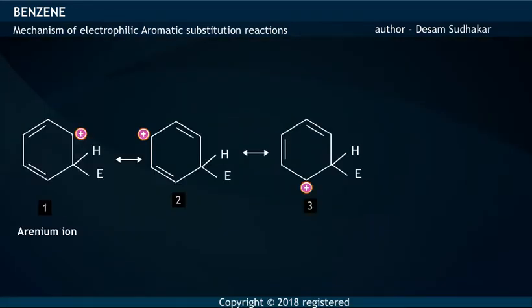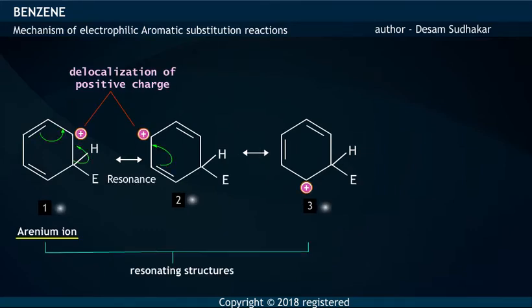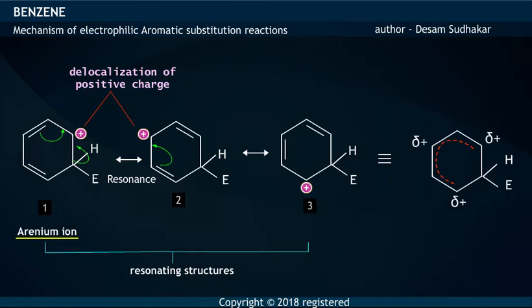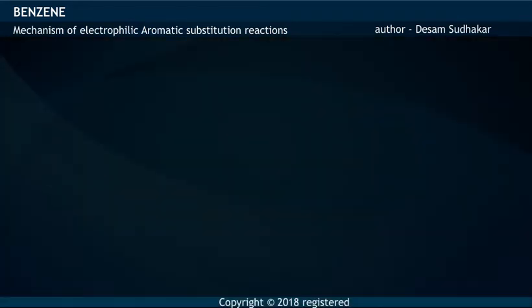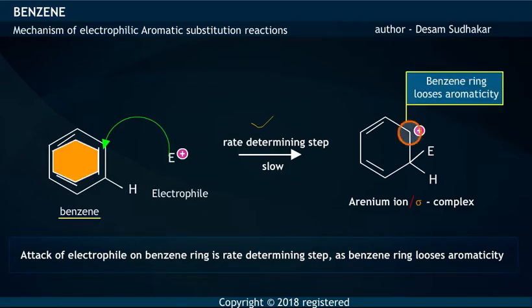The positive charge on the Arenium Ion is delocalized by resonance. Three resonance structures can be drawn for the Arenium Ion and the actual structure is represented by the resonance hybrid. The attack of the electrophile is a slow or rate-determining step, as the Benzene Ring has lost its aromaticity.